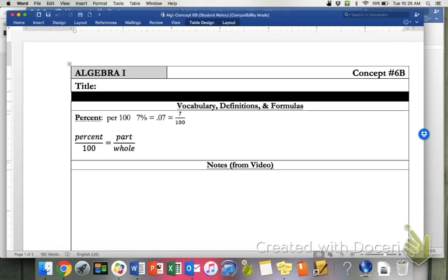This is the percent proportion. Percent over 100 is equal to part, and usually the word 'is' goes with the word part. And whole is on the bottom, and usually the word 'of' goes with that.